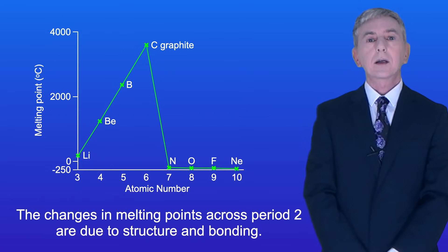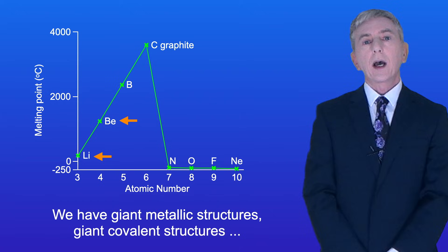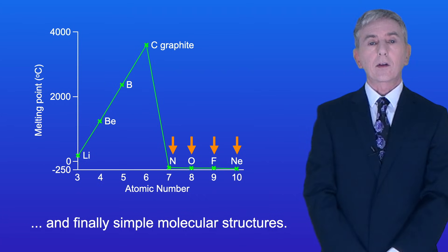So the changes in melting points across period 2 are due to structure and bonding. We have giant metallic structures, giant covalent structures and finally simple molecular structures.